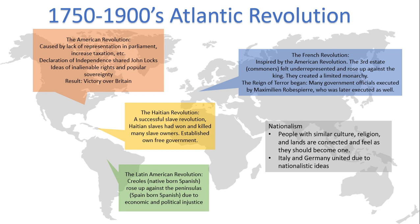In the midst of the French Revolution, the Haitian Revolution formed. This was the first successful slave revolution — Haitian slaves rose up against their slave owners and won. They killed and hanged many of the slave owners and established their own free government in which Africans were equal to Europeans.